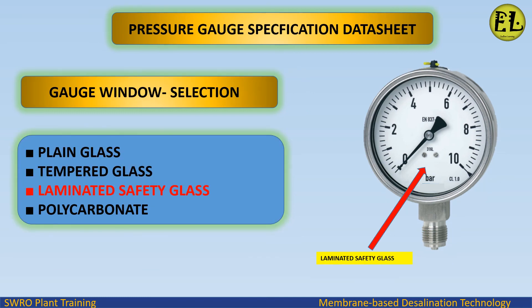Gauge window selection. Options include plain glass, tempered glass, laminated safety glass, and polycarbonate. We select laminated safety glass for this application.